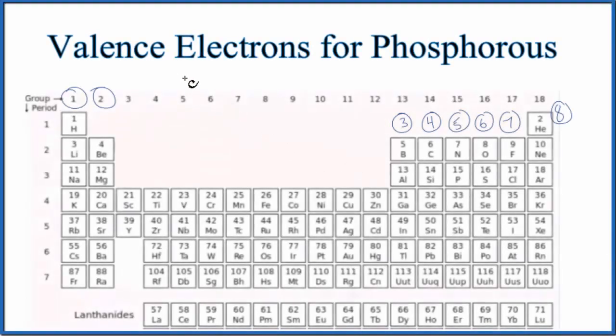In this video, we'll determine the number of valence electrons for phosphorus (P). There are two ways we can determine the number of valence electrons for phosphorus.